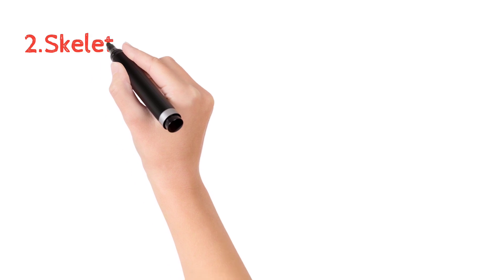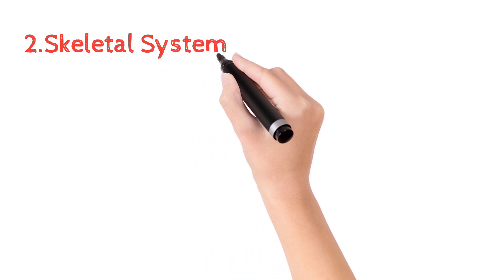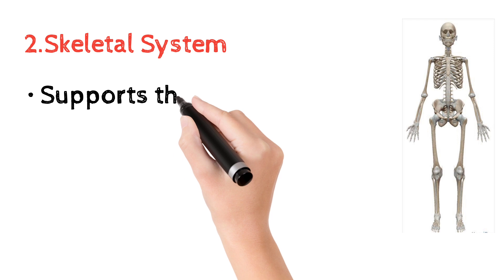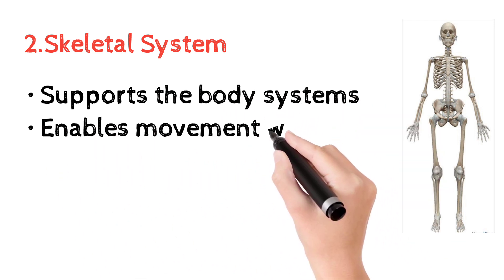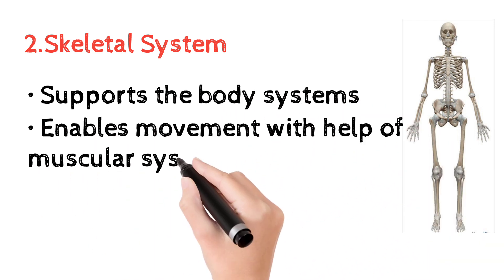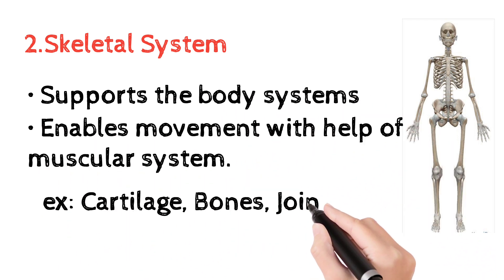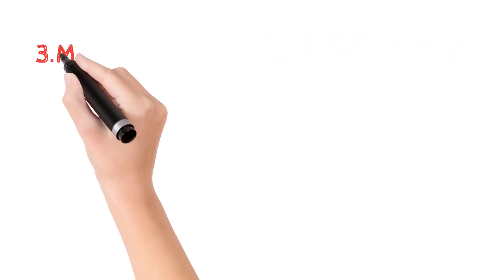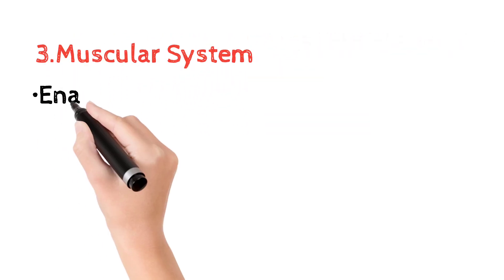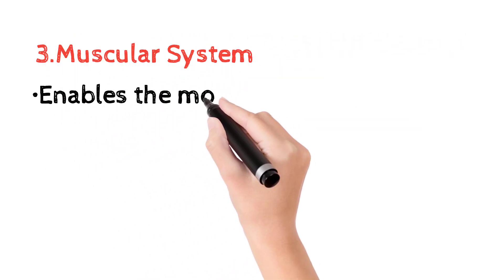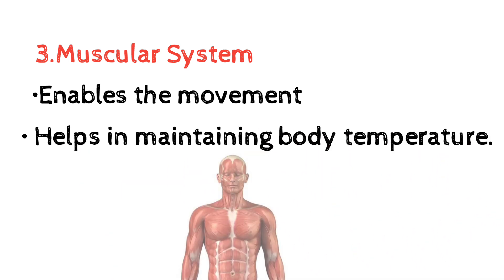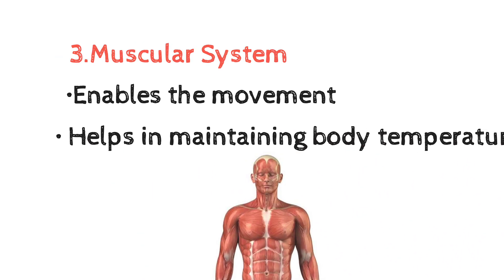Next is the skeletal system, which supports our body and enables movement. After that is the muscular system, which also enables movement and helps in maintaining body temperature.